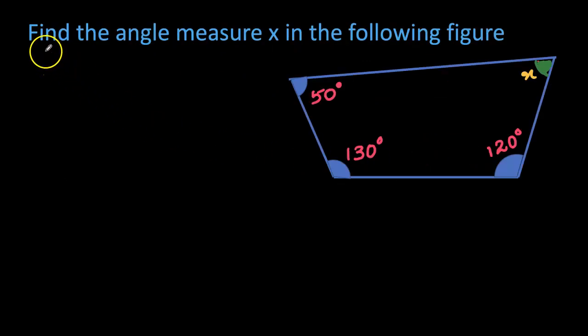Let's see one example. Find the angle measure x in the following figure. This is a quadrilateral called ABCD. The angle at D is missing, so first we should find the sum of the interior angles of this polygon.